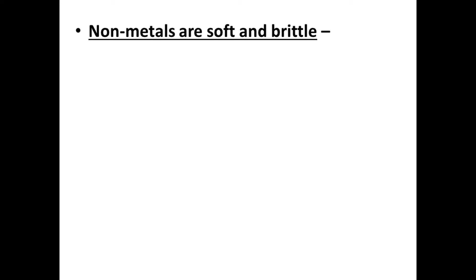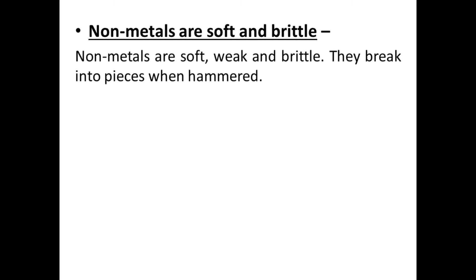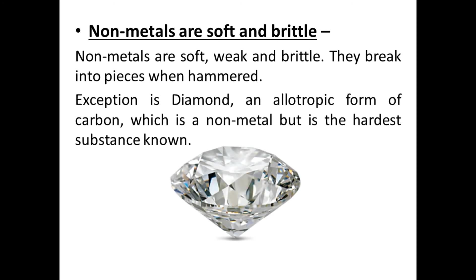Next property: non-metals are soft and brittle. Non-metals are soft, weak, and brittle — they break into pieces when hammered. Exception is diamond — diamond is the allotropic form of carbon. Diamond is a very hard non-metal; it is the hardest substance known, even though carbon is a non-metal.